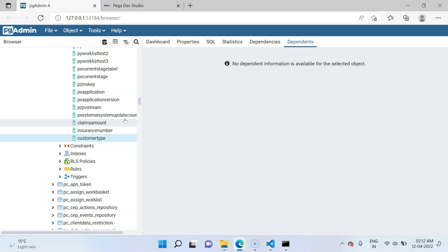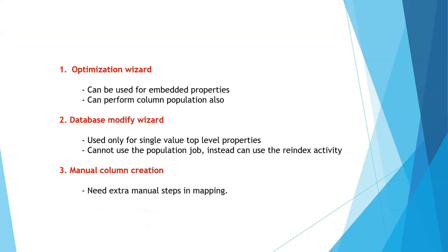What are the ways to expose a column? There are three ways. First is the optimization wizard, which can optimize both top level single value properties and embedded properties. It can also perform the column population job — we will see that briefly in the next lecture. The next option is the database modify wizard, which can only be used for single value top level properties directly at the page level. It cannot be used for embedded properties and cannot do the column population job at the time of modifying the database.